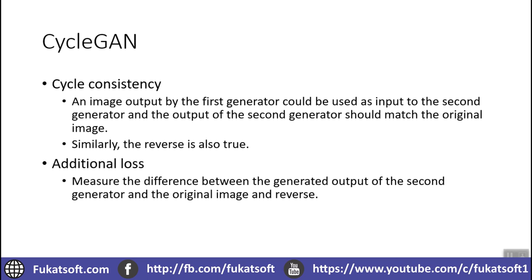There is an additional loss other than the adversarial loss, which we use to optimize the generator and discriminator. This loss compares the input and the output that comes from the second generator. For example, we input a zebra to the first generator which converts it to a horse, then the second generator converts that horse image back into a zebra image, and we compare both zebra images — the one given as input and the one generated as output — pixel-wise and using other comparisons to see if there is consistency.